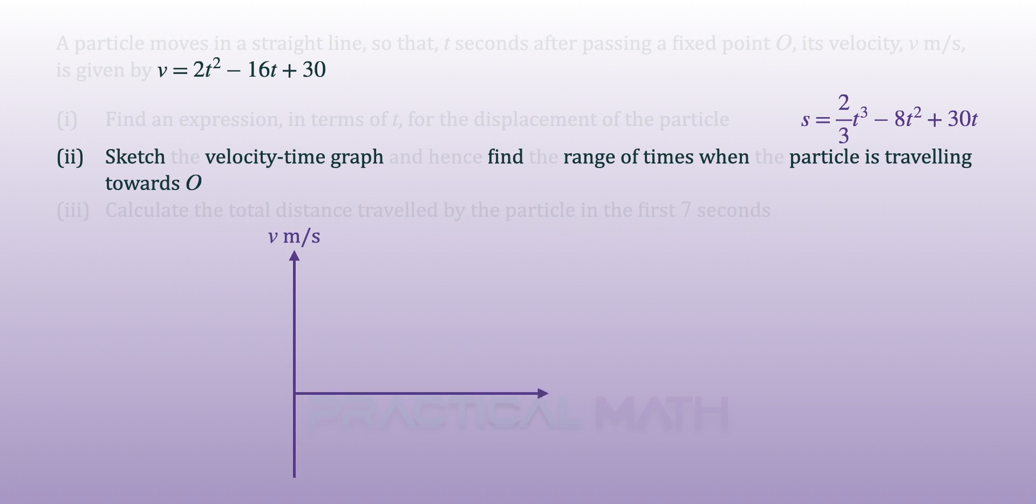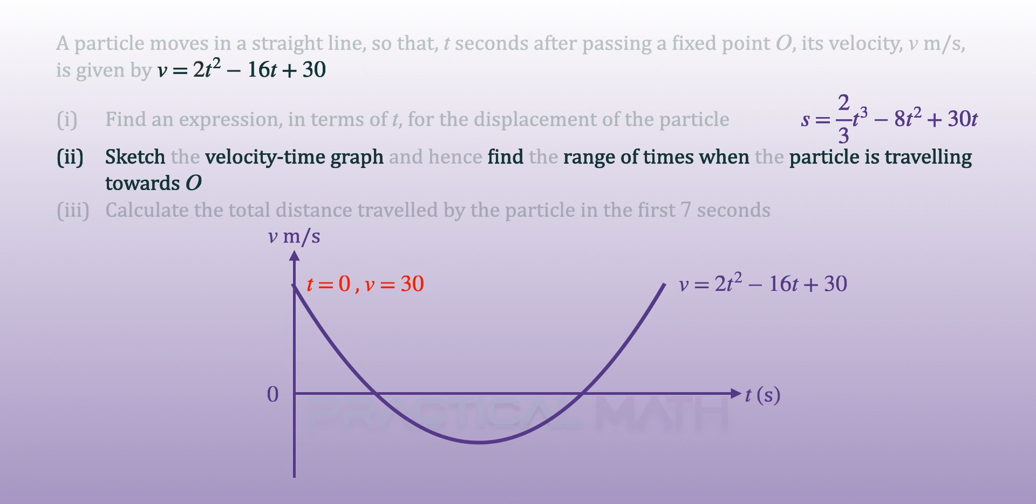We will begin with the vertical axis of v meters per second and horizontal axis of t seconds. As the coefficient of t² is greater than 0, the shape of the quadratic curve is a happy face, also known as minimum curve. By replacing t to be 0 into the velocity equation, our vertical intercept is found to be 30.